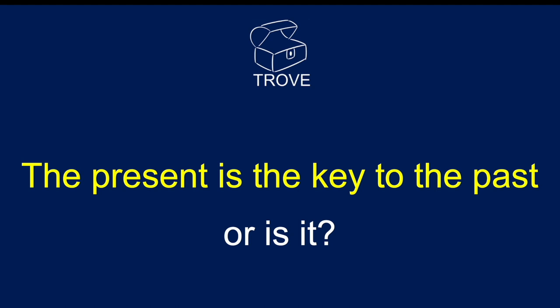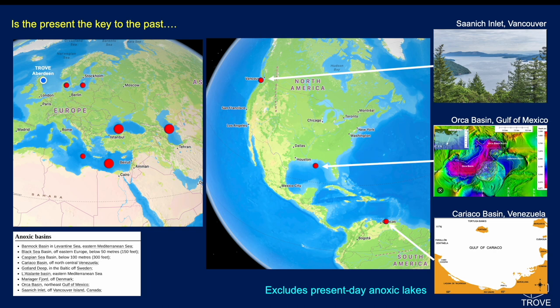We often hear that the present is the key to the past. When we look at source rocks, is it? Let's look at the present. On this map, we can see various red dots — here in the Kattegat, in the Baltic, in small patches within the Mediterranean Sea, the Black Sea, and the Caspian Sea. Also within an inlet near Vancouver, and another very small area in this Orca Basin — a local little anoxic area.